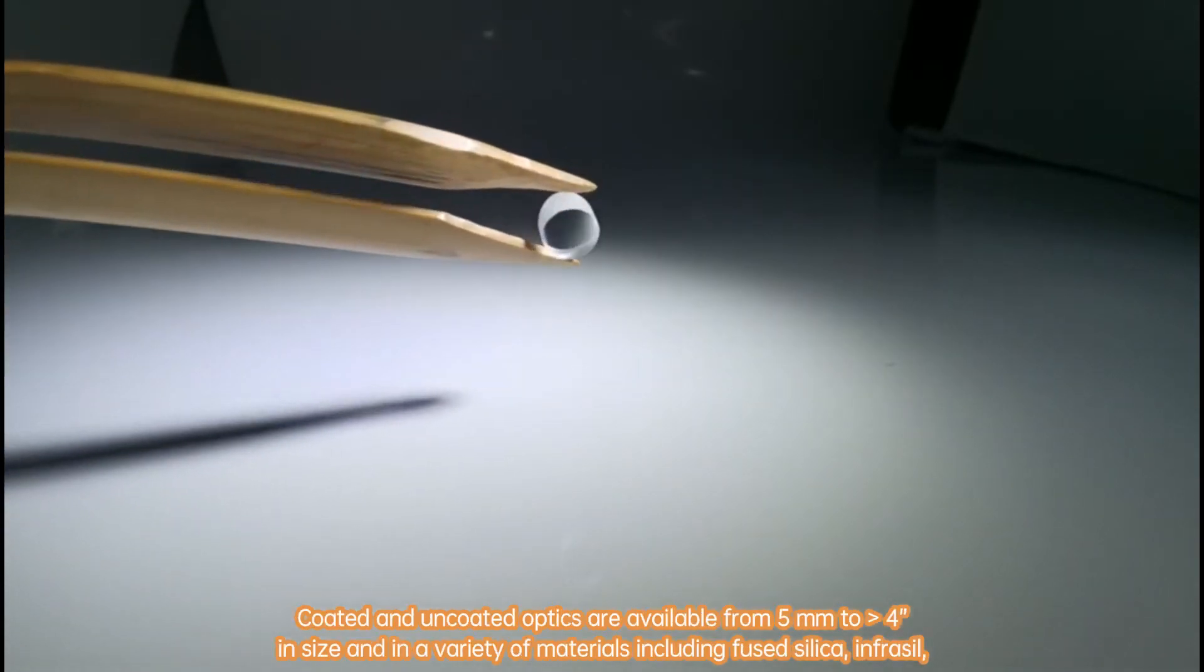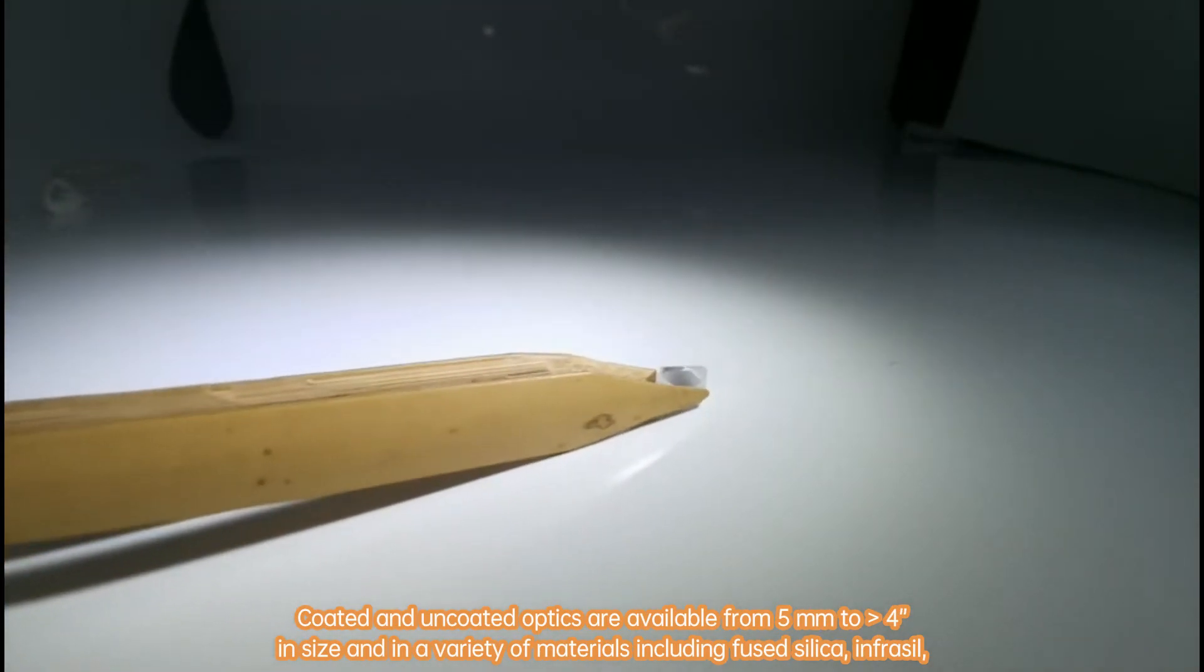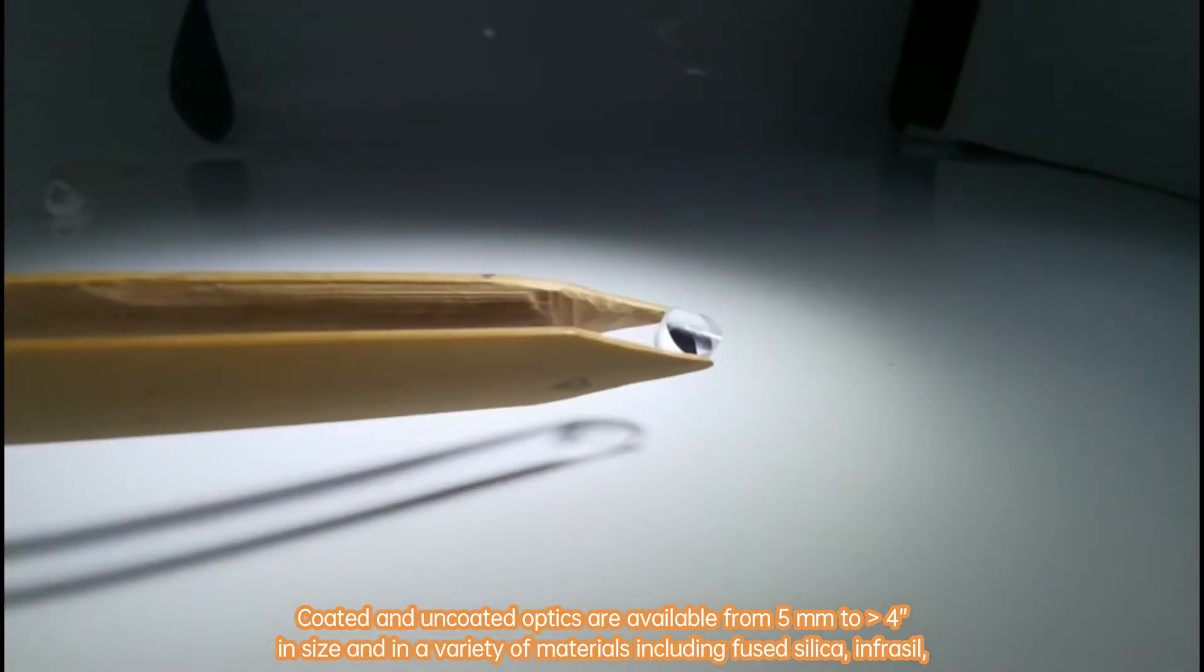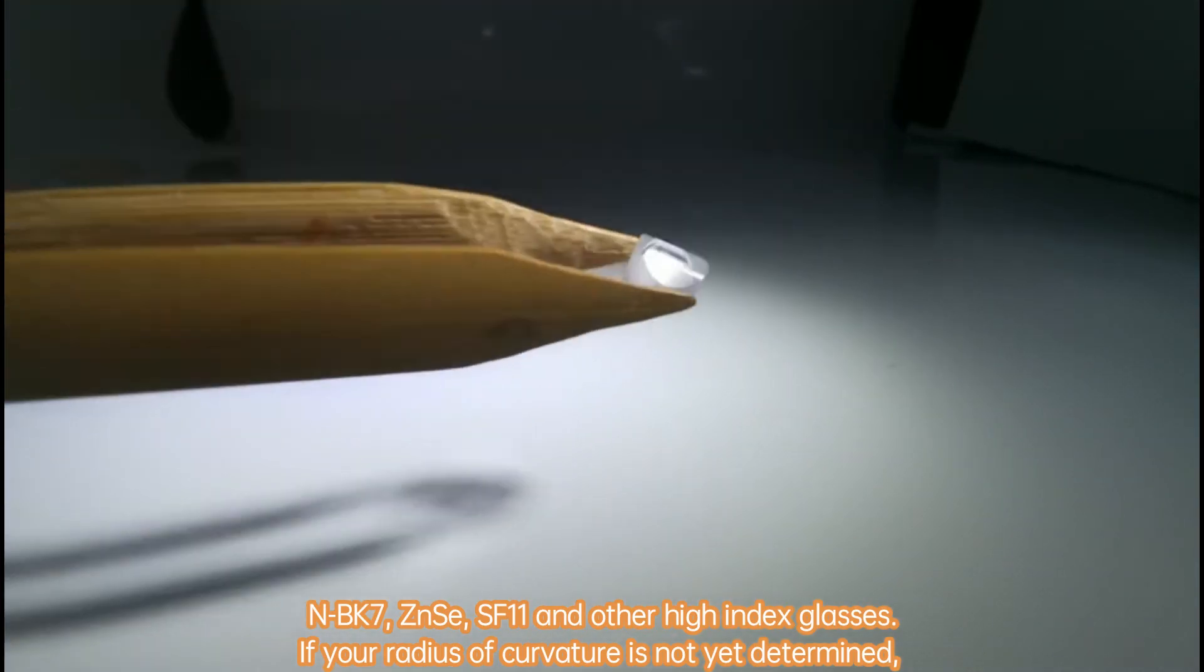Coated and uncoated optics are available from 5 mm to greater than 4 inches in size and in a variety of materials, including fused silica, infrasil, NBK7, zinc selenide, SF11, and other high-index glasses.